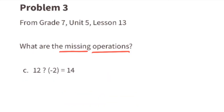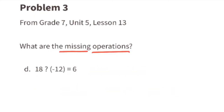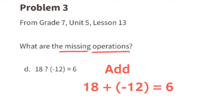Part c: what operation can we substitute for the question mark to make this true? An addition sign, because 18 plus negative 12 equals 6 — that's the same as 18 take away 12 equals 6.